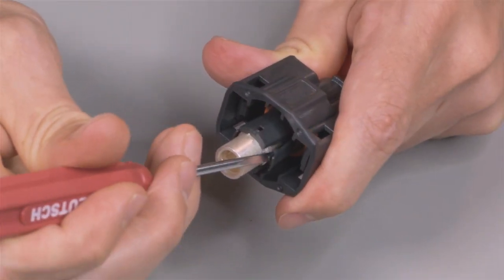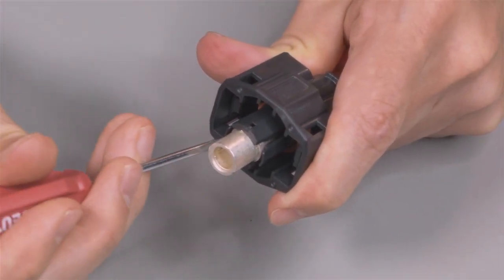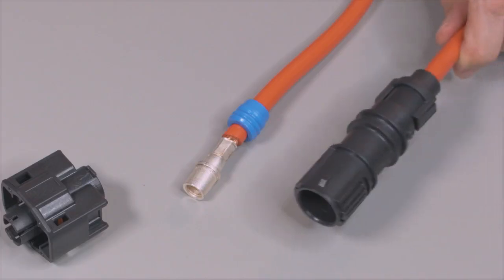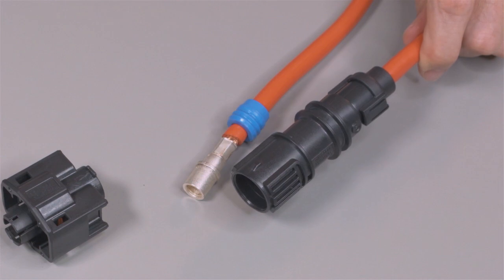Release the locking fingers by moving them away from the shoulder of the contact while gently pulling the wire through the rear of the connector. Repeat the same process for the receptacle and plug halves of the connectors.